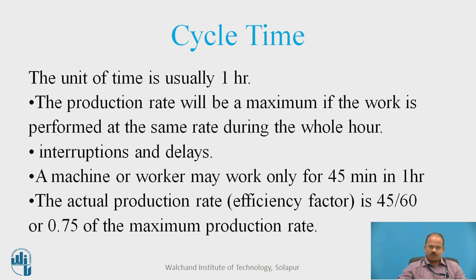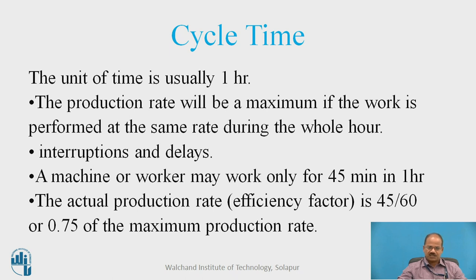The cycle time can be in different units, but the basic unit normally considered is one hour. The production rate will be maximum if the work is performed at the same rate during the whole hour. However, interruptions and delays are unavoidable, so there will be some relaxation for that. A machine or worker may work only for 45 minutes in one hour, taking into consideration the interruptions and delays.